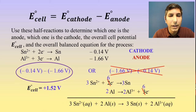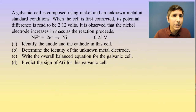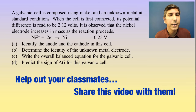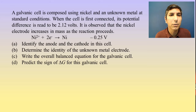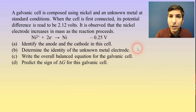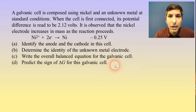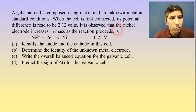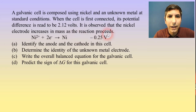Let's try one that's a bit more advanced. We have a half reaction here. For part A, identify the anode and the cathode. There's a nugget of information the question gives us that we need to use in order to answer that.